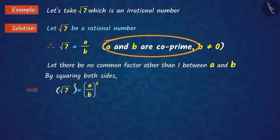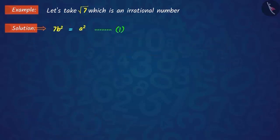By squaring both sides and rearranging, we get 7b² equals a². That means that 7 divides a². Therefore, 7 will also divide a.